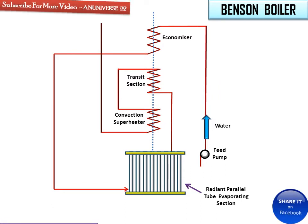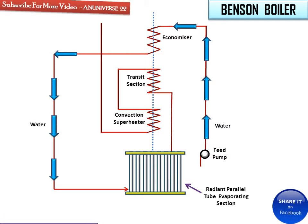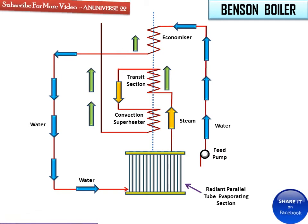With the help of arrows, we can see water flowing to the economizer. From the economizer, heated by flue gases, it is supplied to the radiant parallel tube evaporating section. From there, saturated steam is supplied to the transit section, and from the transit section this saturated steam is supplied to the superheater. The green arrows show the path of the flue gases, and steam is supplied to the prime mover.